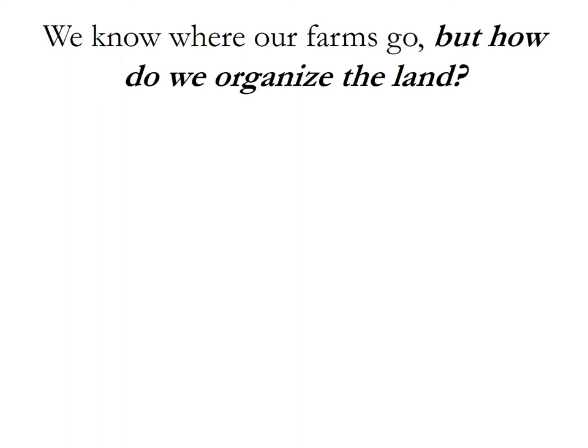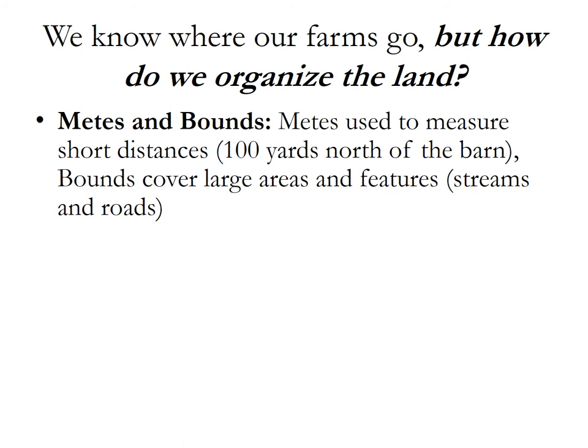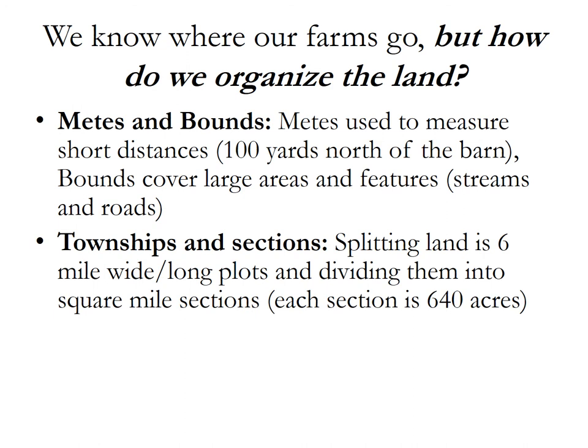So we know how we place farms, but how do we organize the land? College Board says you have to understand three ways, and you can see all three in the United States: Metes and Bounds, Townships and Sections, and the French Longlot System. The first, Metes and Bounds, uses specific landmarks to draw distances on a map. Townships and Sections, seen throughout the Midwest, splits up large amounts of land into six-mile-wide and long plots, divided into square-mile sections of 640 acres each — an easy way to divide flat land. Very Von Thunen inspired.